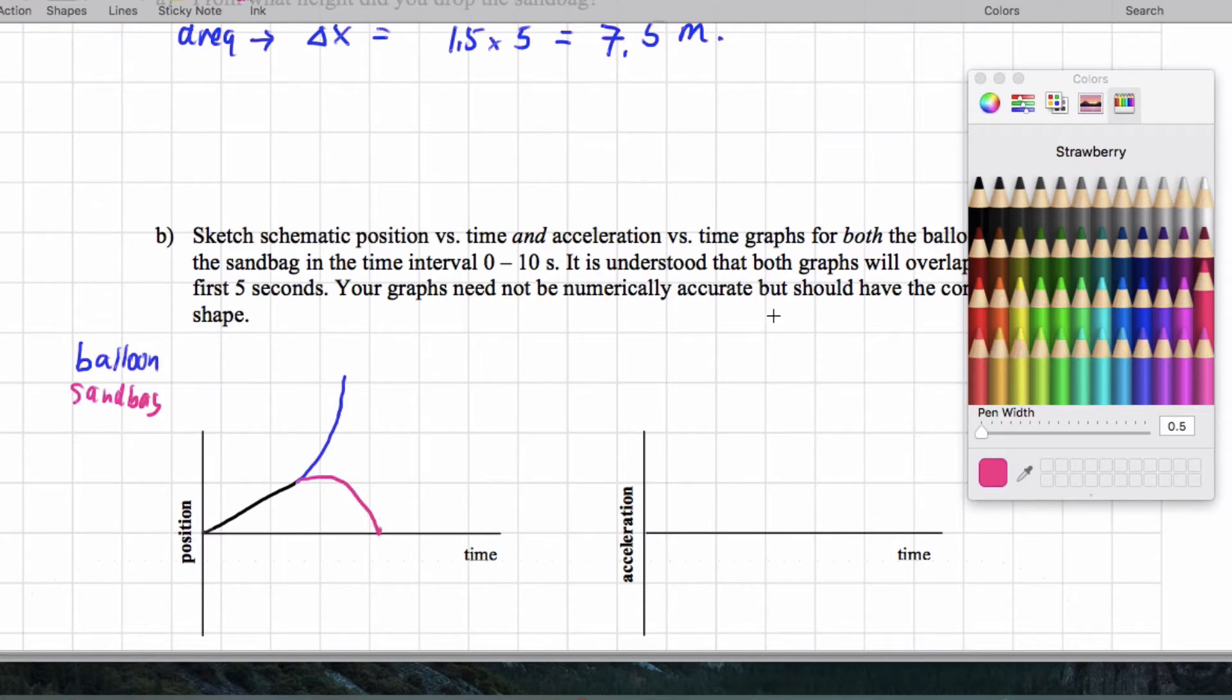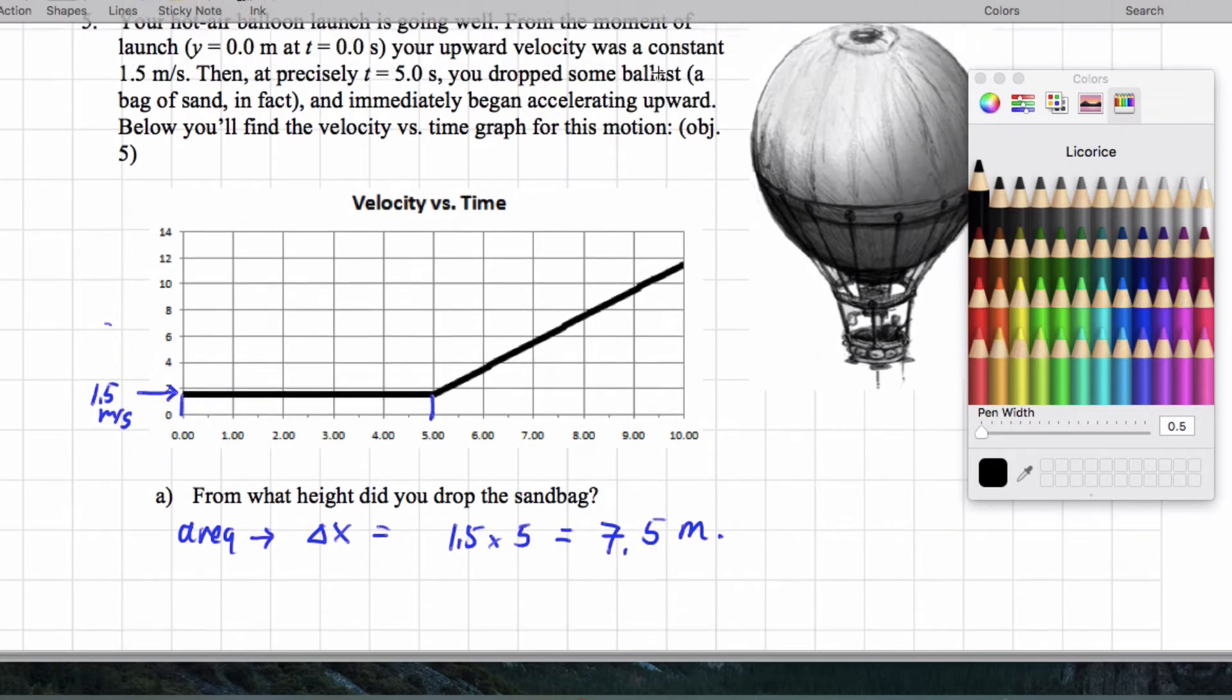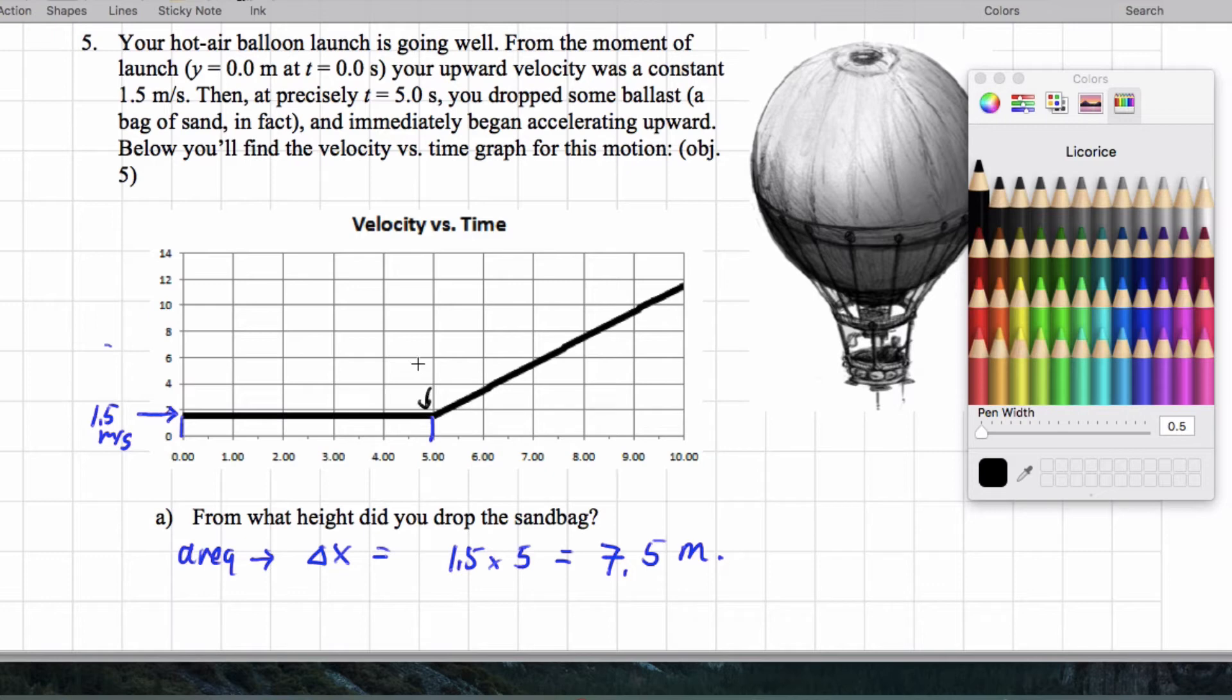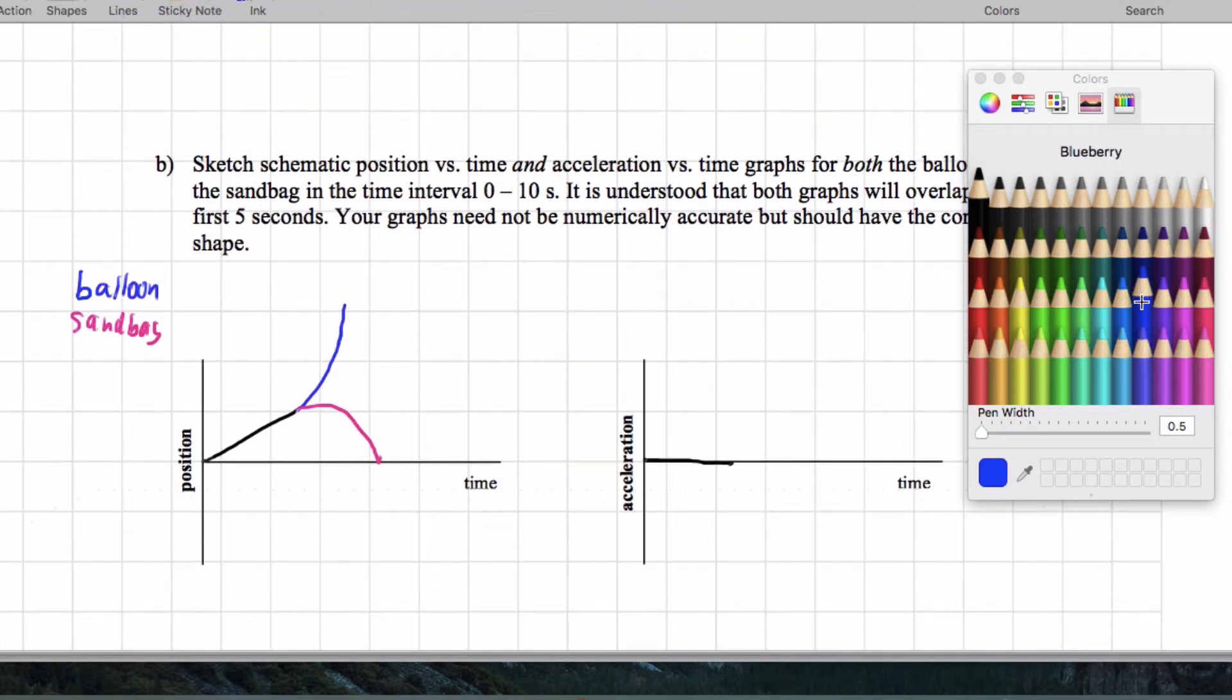speeding up at 9.8 meters per second. Now the acceleration, for both, it's 0. And then for the balloon, let's actually get its acceleration. So we are told that at 5 seconds, we've got 1.5 meters per second. And then at 10 seconds, it looks like, kind of guesstimating here, it's really hard to see. I really do wish I had a clearer graph, but I'm going to have to eyeball this and say that we're at about 11.5 meters per second. So the acceleration is going to be 11.5 minus 1.5 divided by 5 seconds. That's going to give me 10 divided by 5, which is 2 meters per second squared for the balloon.